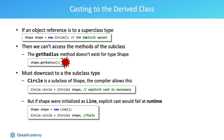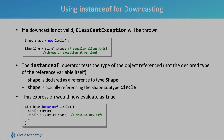But if shape were initialized as line, explicitly casting this would fail at runtime. The instanceof operator allows us to test what kind of instance we have. Once we have confirmed the fact that we have a specialized instance, we can then cast the general reference to the actual subtype we have, and access the specialized methods of the instance.